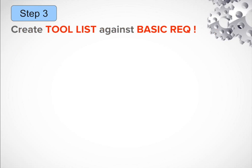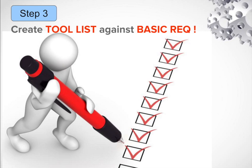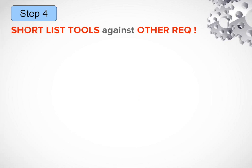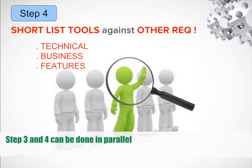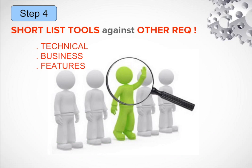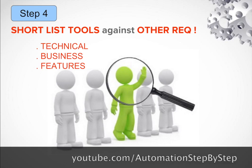Step number three: create a list of tools against your basic requirements only. This list can be a little longer since you are only checking basic requirements at this stage. Step number four: take the list of tools from step three and start shortlisting by striking off tools against technical requirements, business requirements, and features. In most cases you can do steps three and four in parallel, but doing them in two steps is beneficial because you will get a template of requirements and tools that you can reuse in future projects.